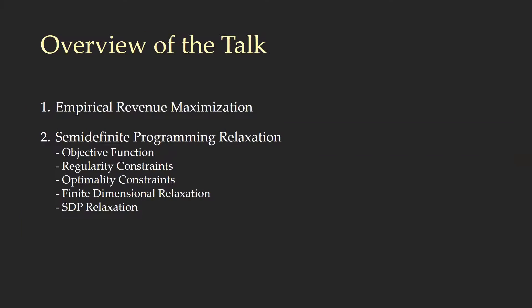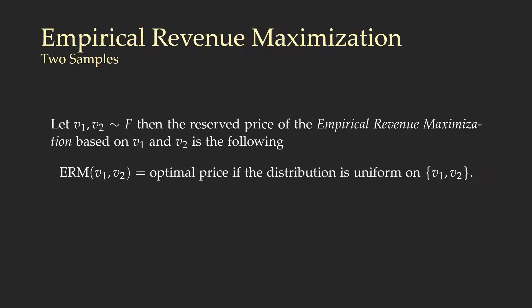I'll first describe the empirical revenue maximization mechanism and its rounded version analyzed in this paper, then briefly explain the main ideas of how to build our semi-definite relaxation. The empirical revenue maximization (ERM) mechanism is a posted-price mechanism where the reserve price is computed based on the two samples V1 and V2. Namely, the reserve price equals the optimal reserve price when the actual distribution is the empirical distribution observed—that is, a uniform distribution over the set {V1, V2}.